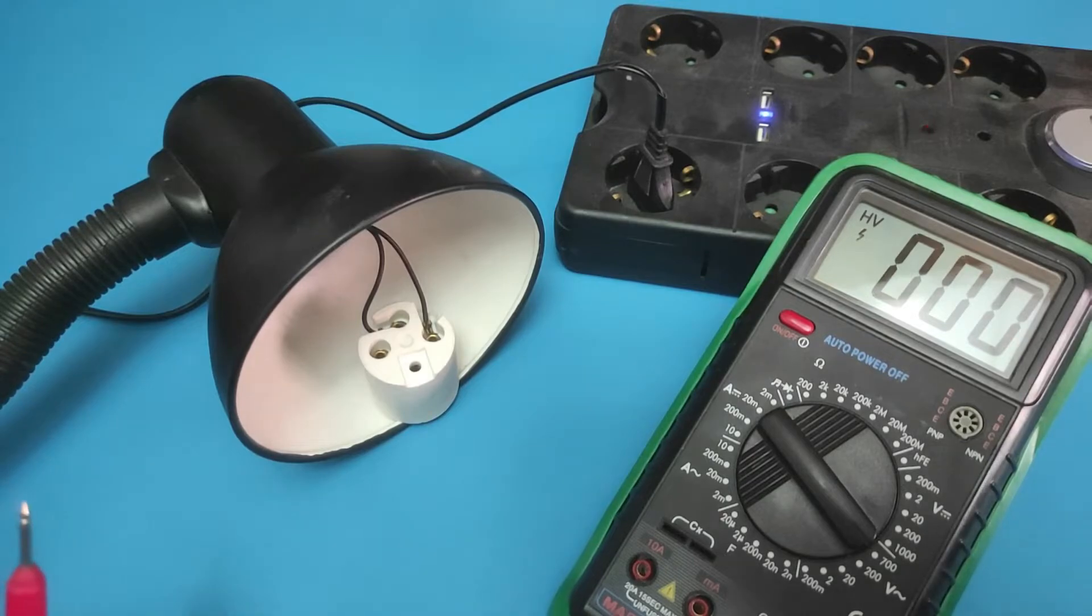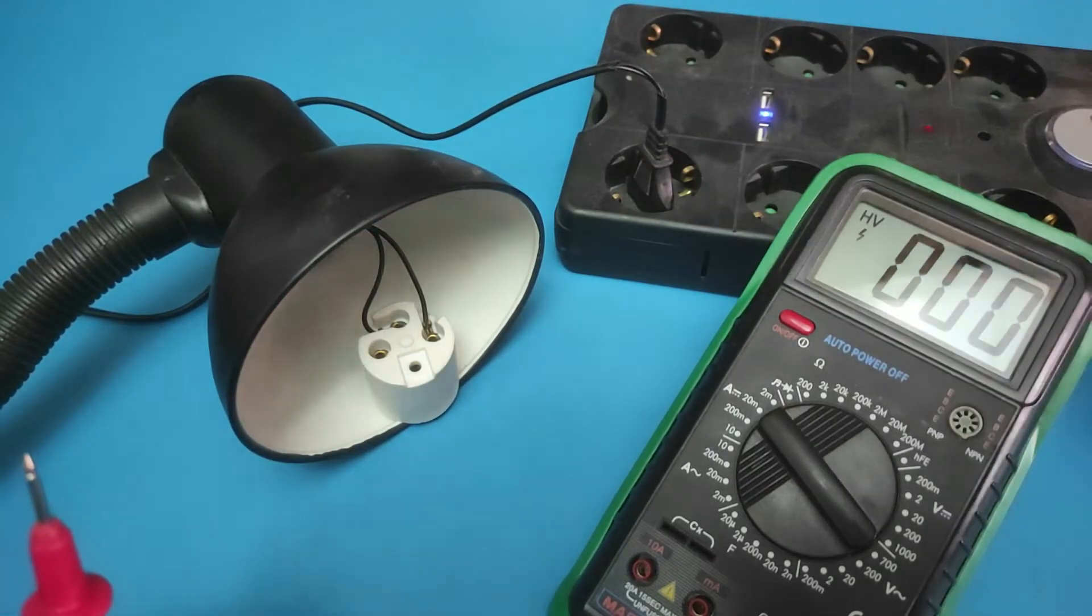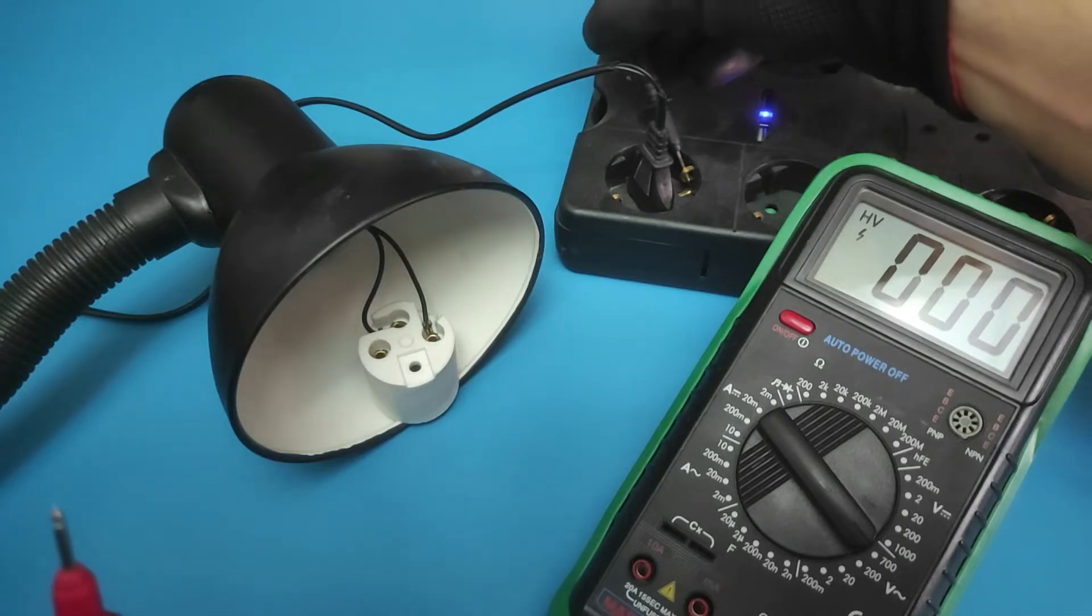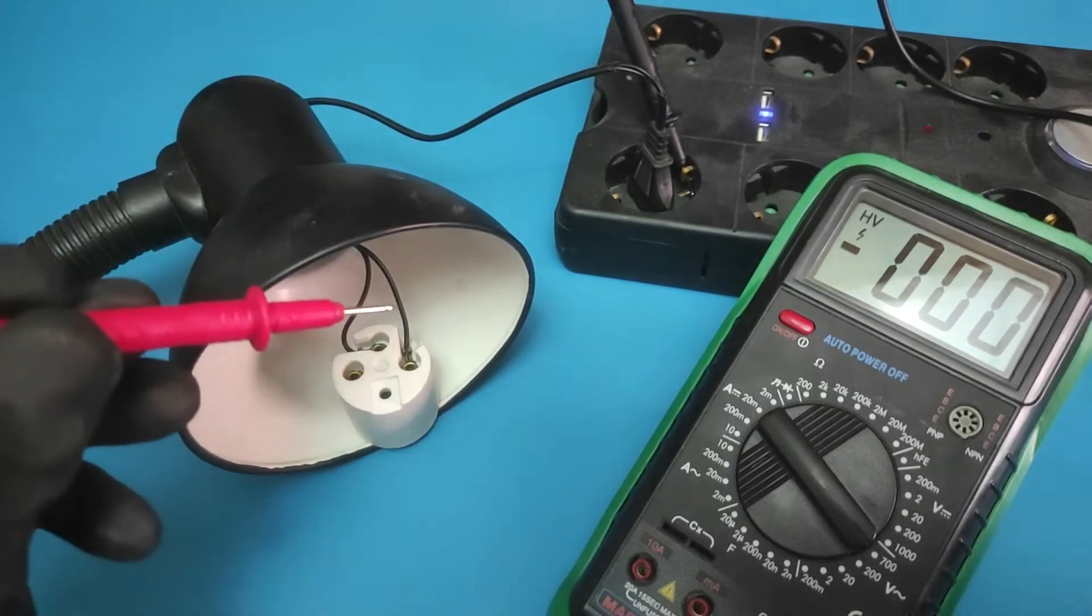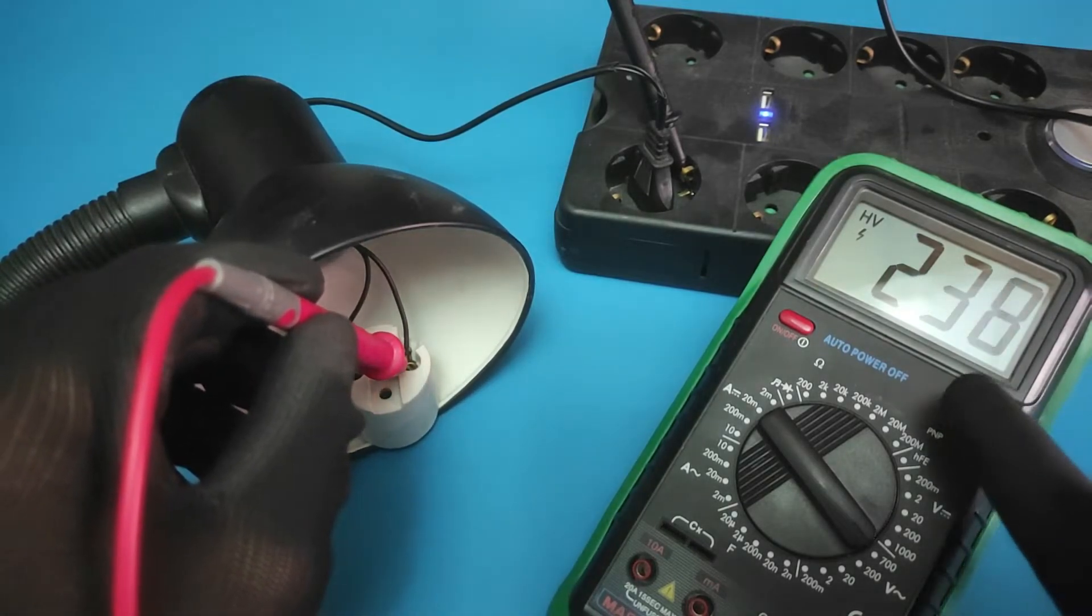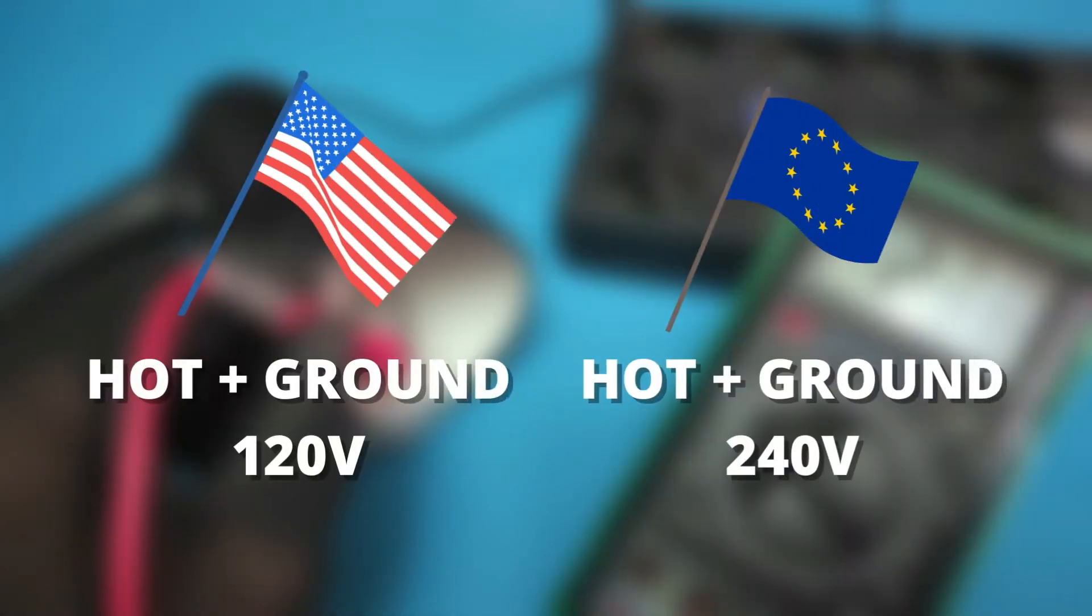Now connect one probe to ground and the other to one end of the cable. If you get a voltage reading around 120 or 240 if you live in Europe, that means you located the hot wire. This method is best for finding hot wires, in my opinion.